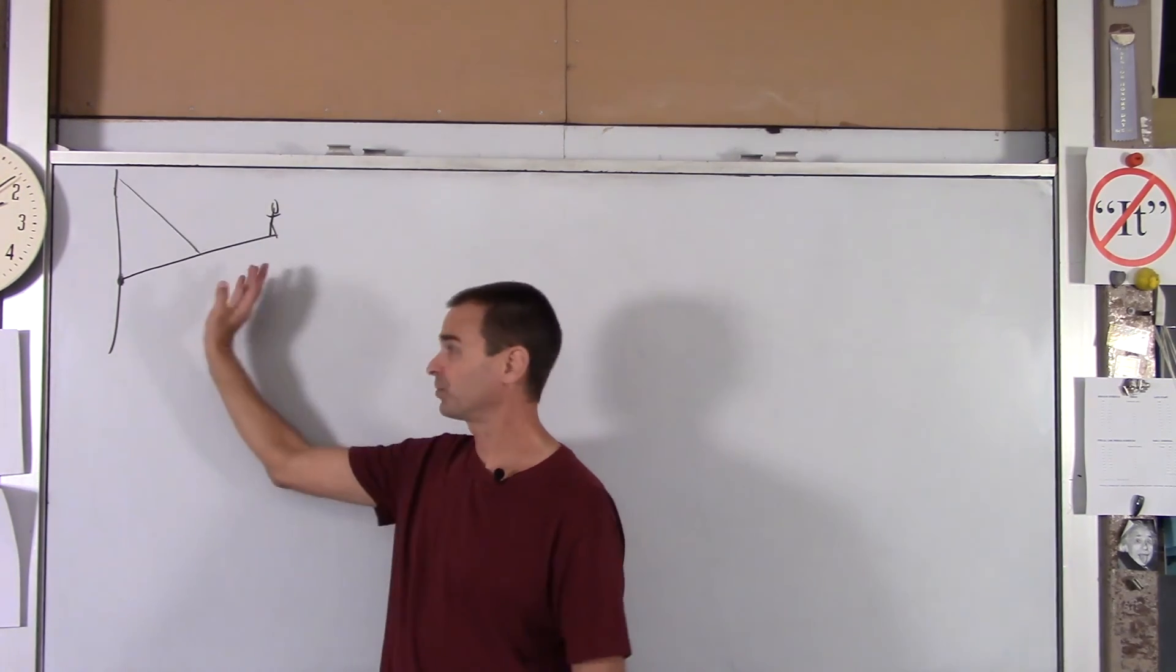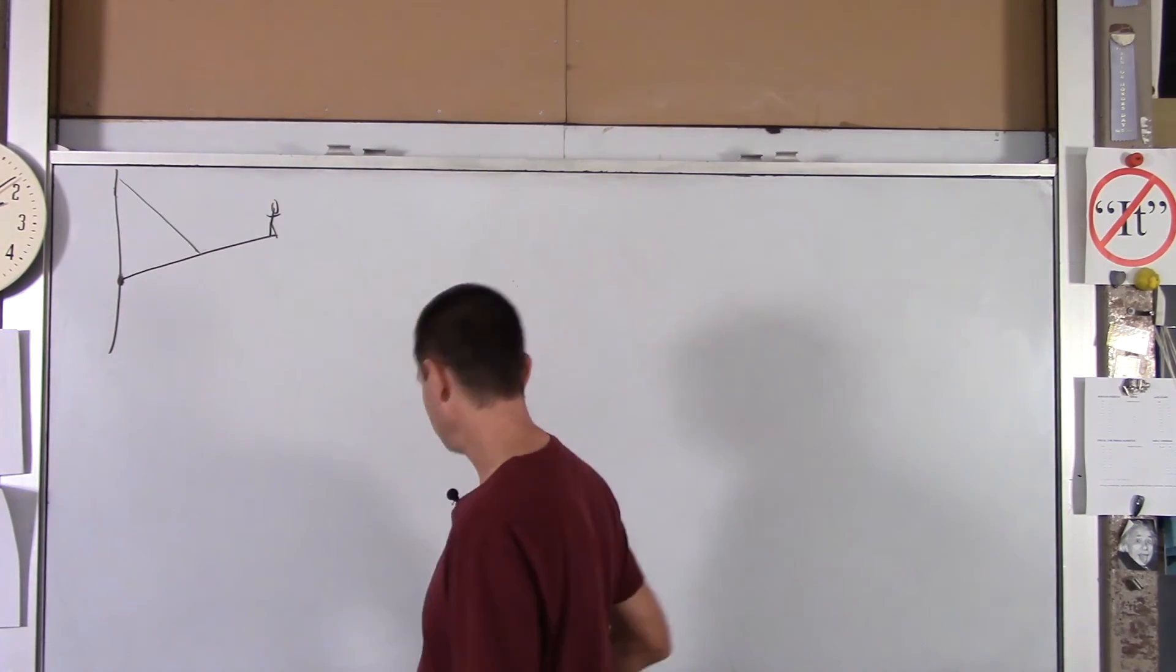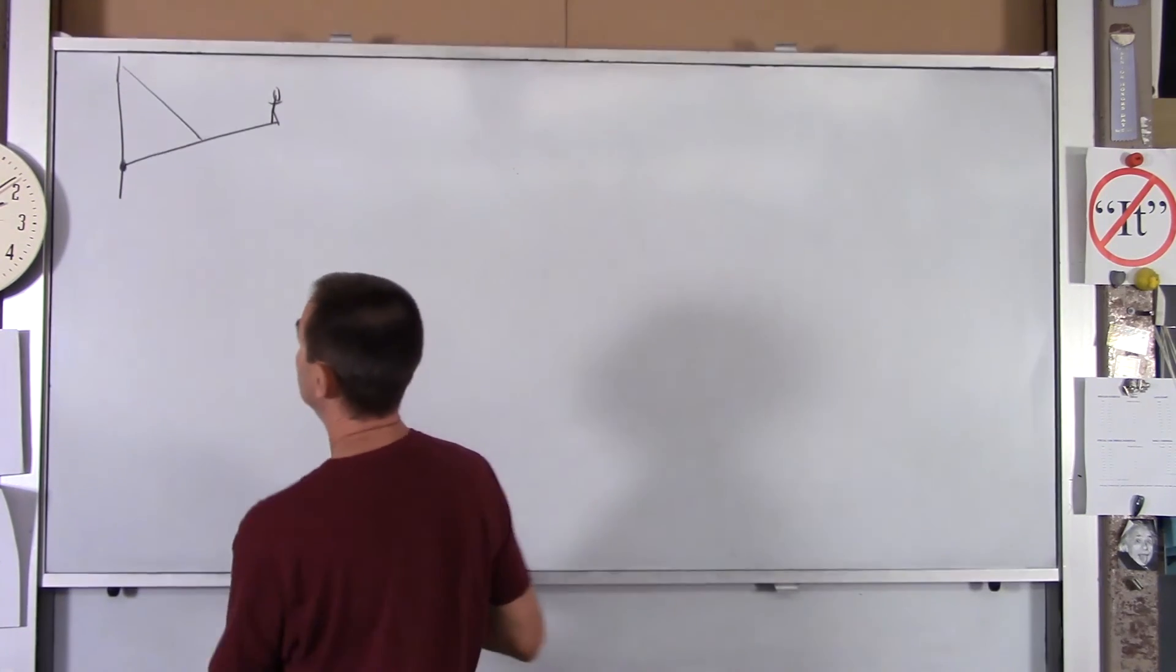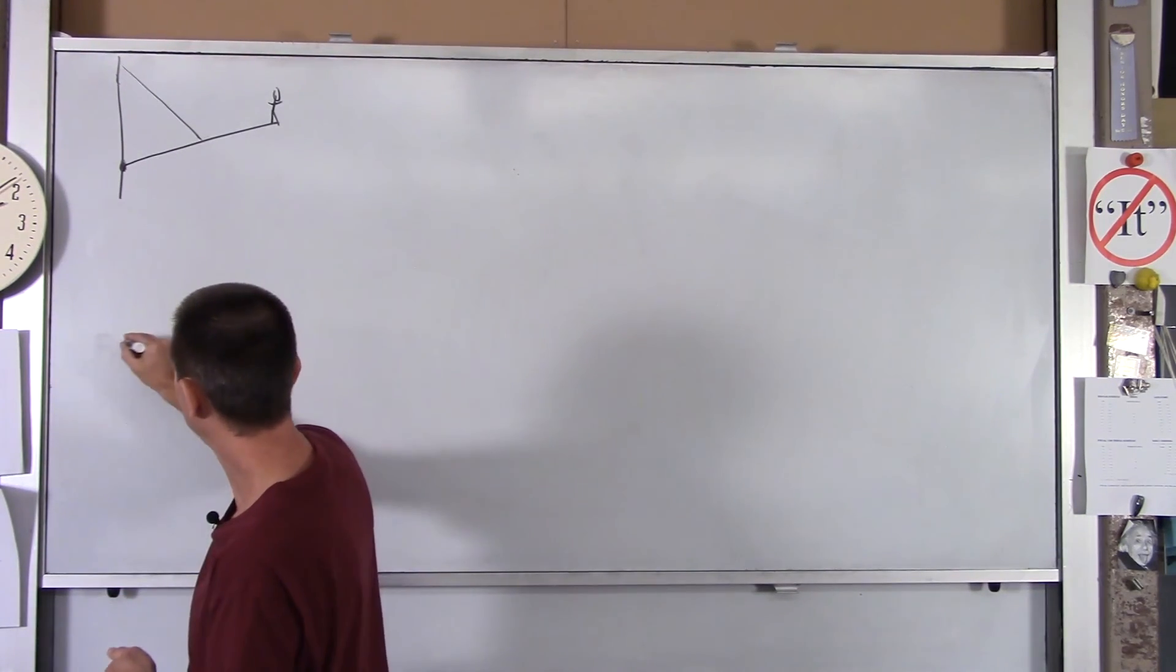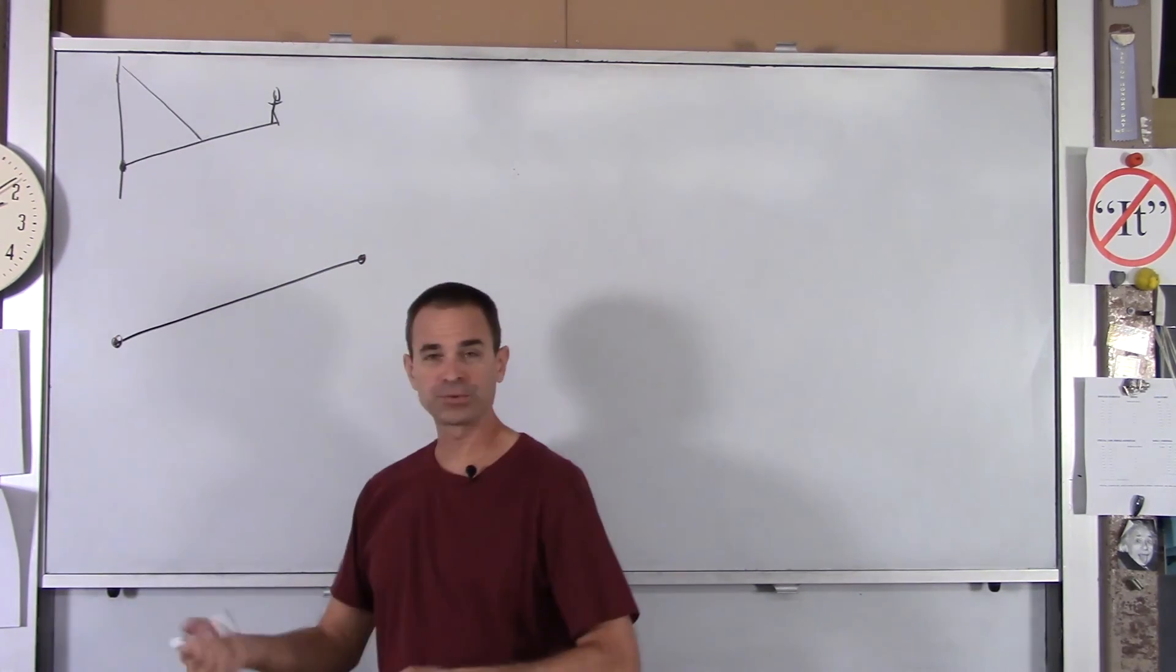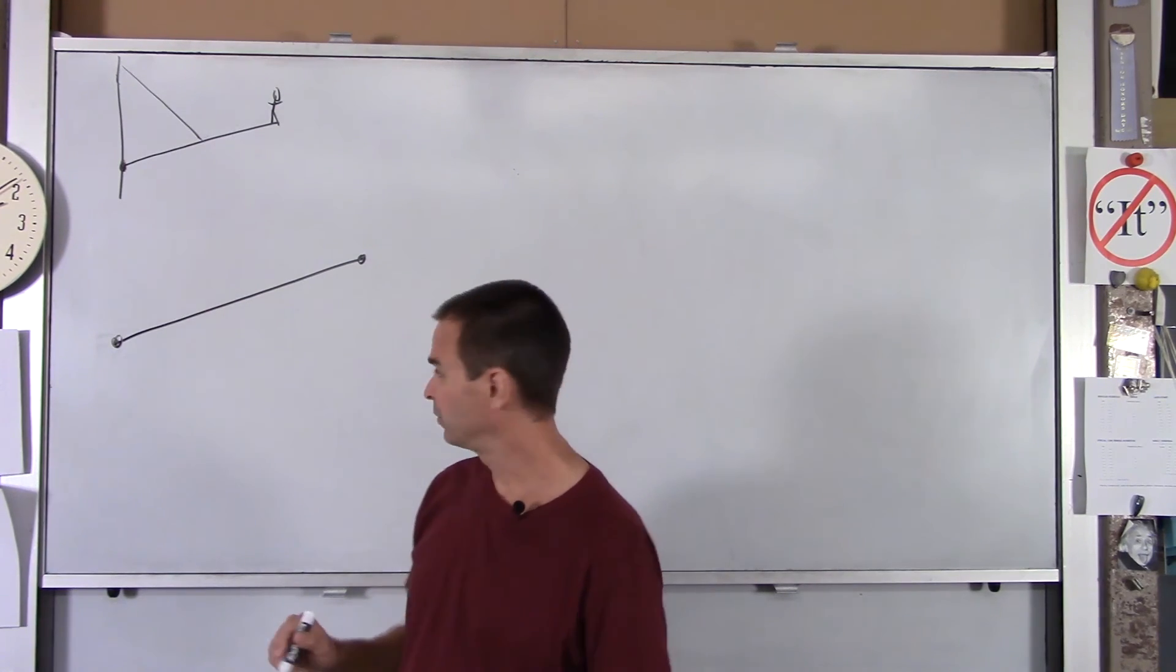So this is a little sketch. Now we're going to draw an actual FBD of the drawbridge. I'll draw it kind of big because we're going to be writing all over it. So what forces act in the drawbridge? Well, first of all, you're going to have the weight of the drawbridge itself.